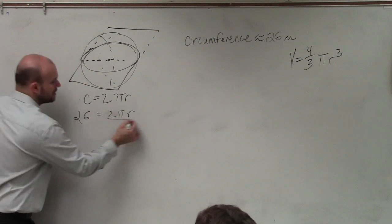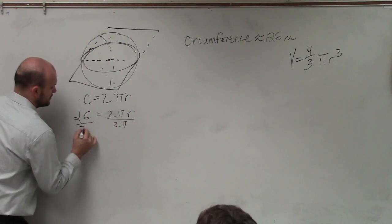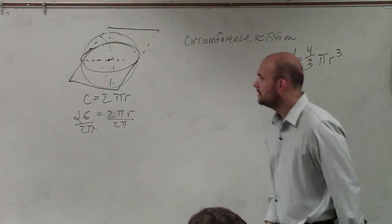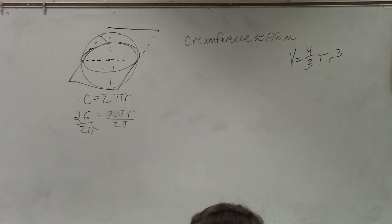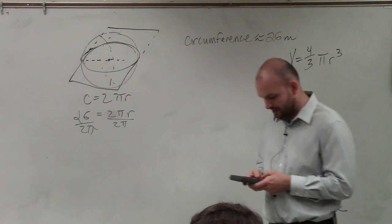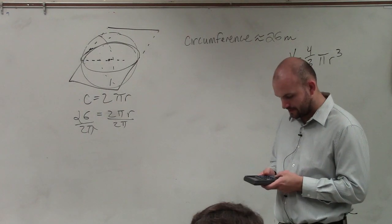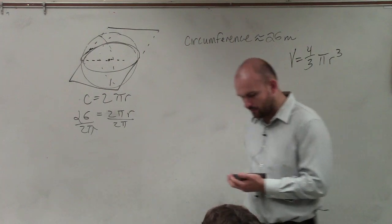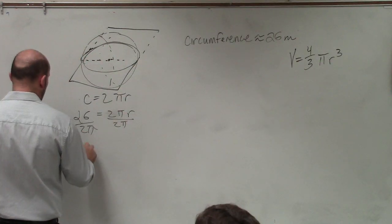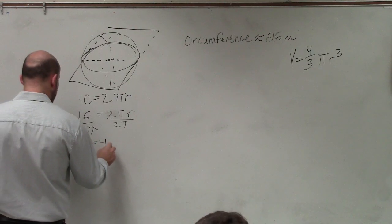Now I solve for r. So I divide by 2 pi. You can divide them separately if you like, or you can just do it at the same time. So now I take my calculadora and I just take 26 divided by 2 pi. And I get 4.13 when I round to the tenth. So r equals 4.1.